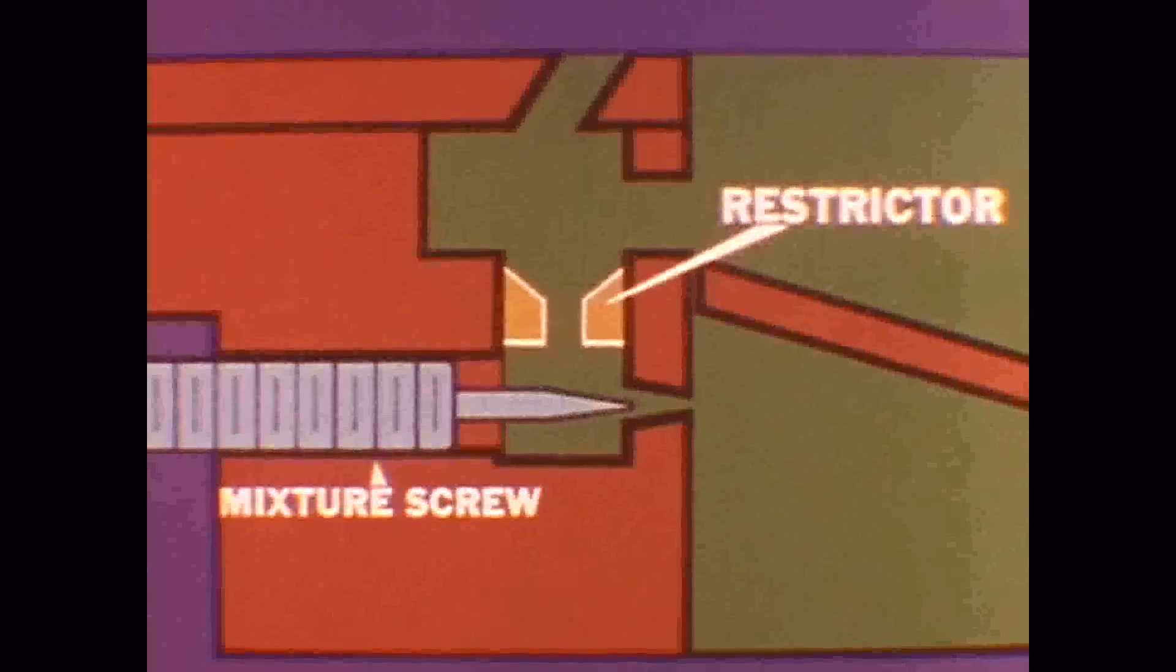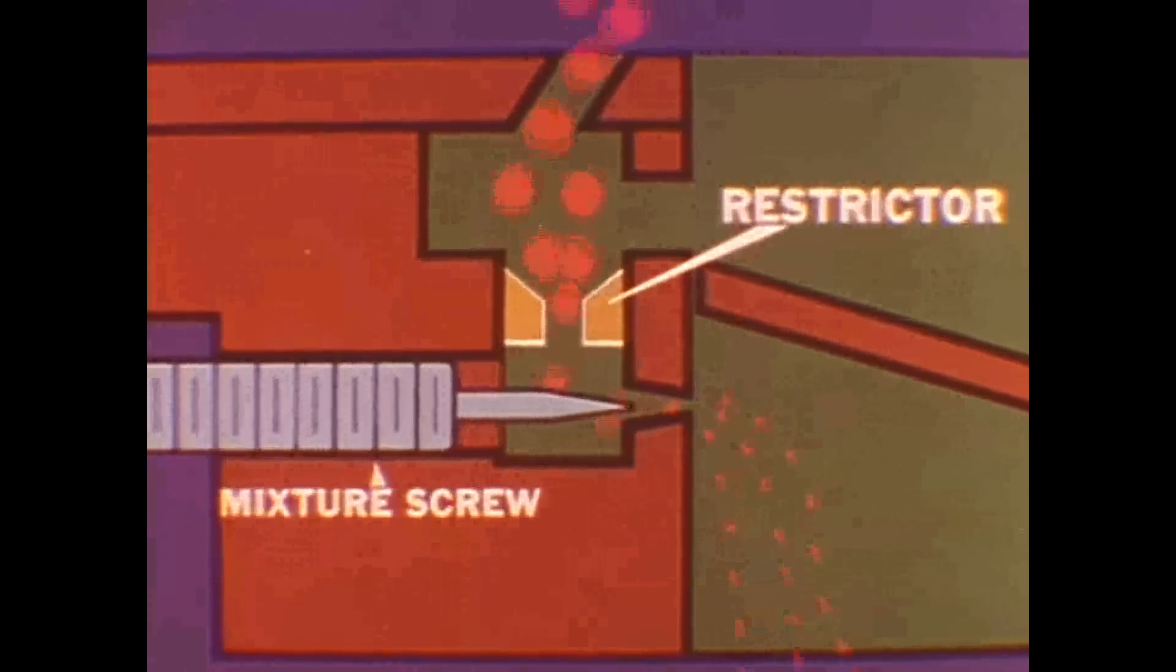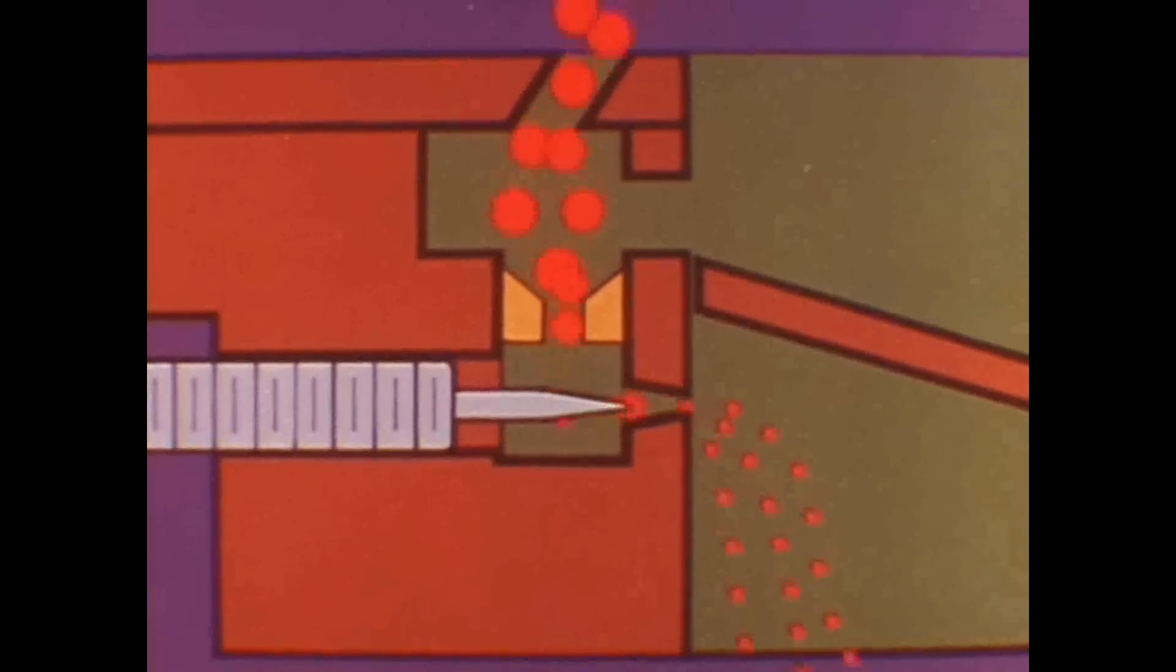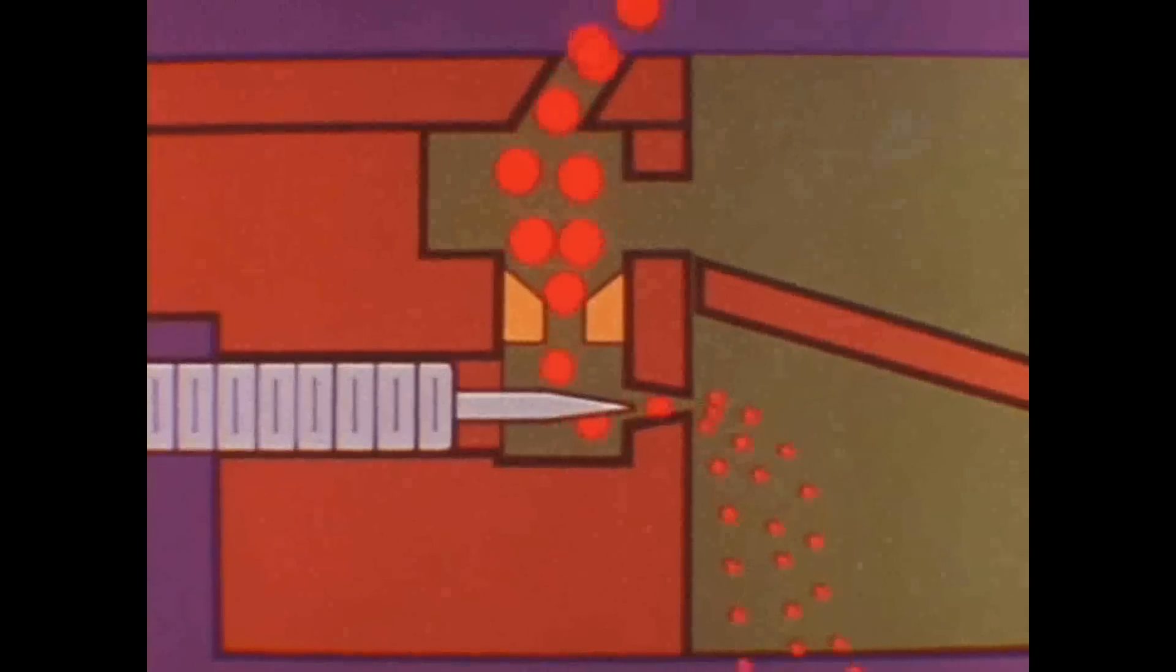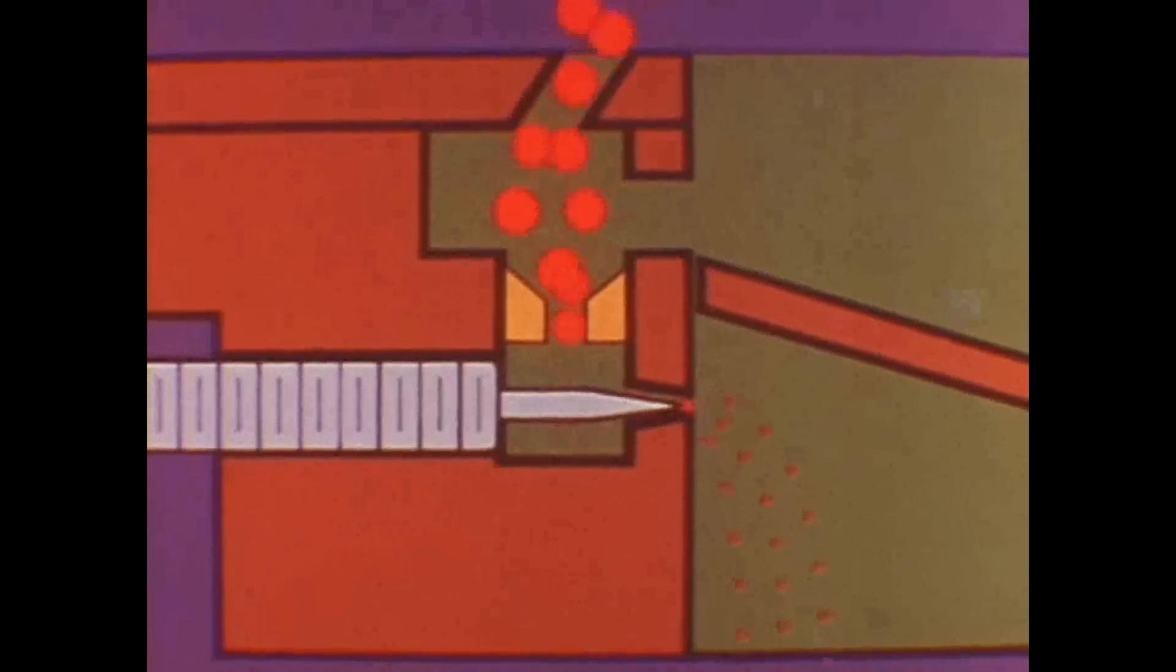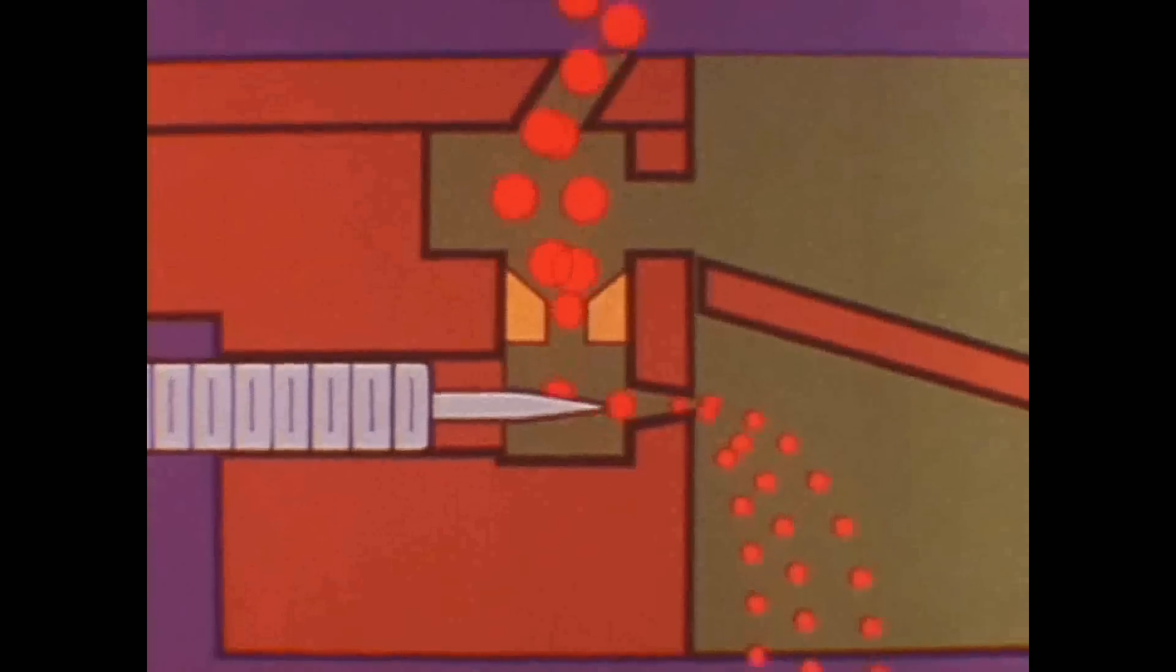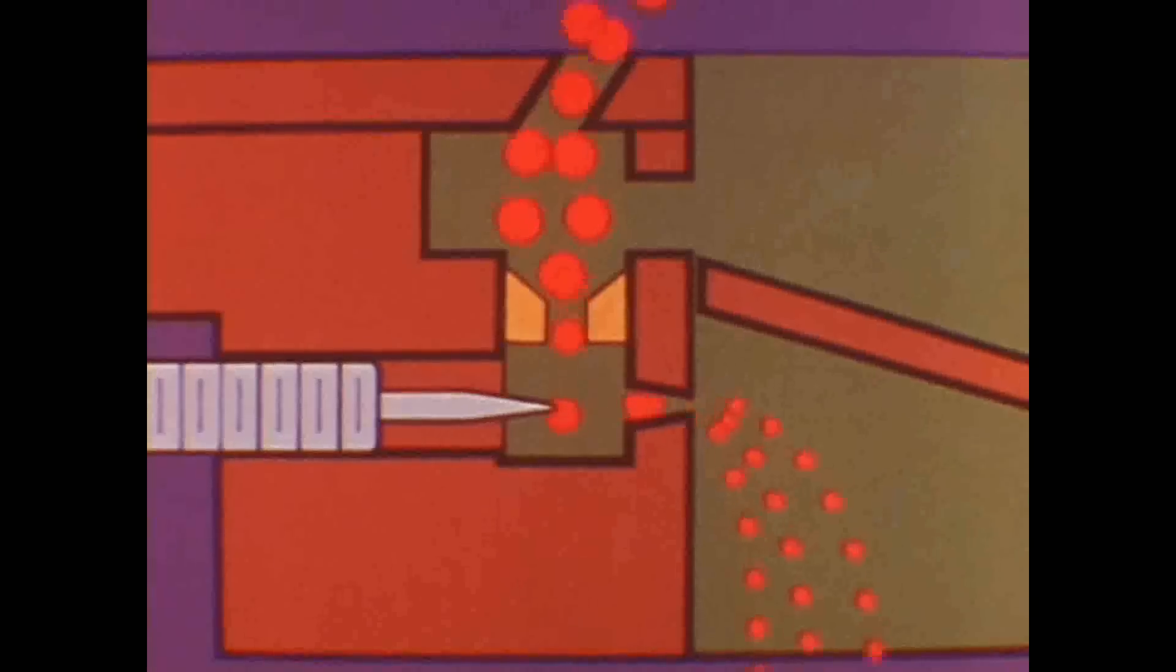Idle mixture restrictors function much like main metering jets. That is, the size of the small drilled hole in the idle mixture restrictors is precisely calibrated. In other words, you can reduce the fuel mixture flow at idle speeds by turning the mixture screw inward, but as the screw is turned outward and the idle mixture flow reaches its maximum, additional outward turns, even with limiter caps removed, cannot make the idle mixture richer.